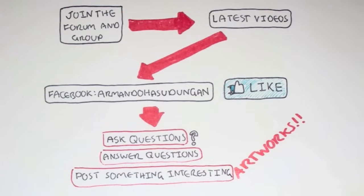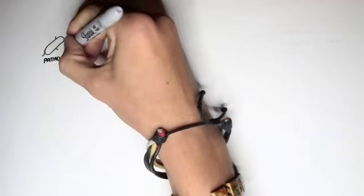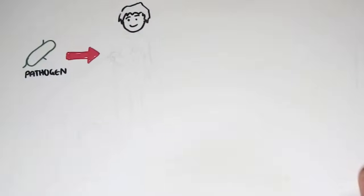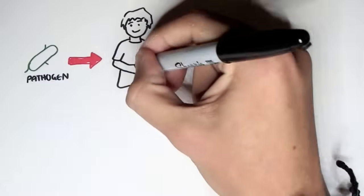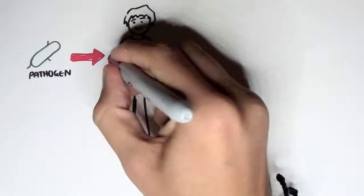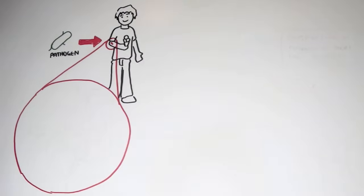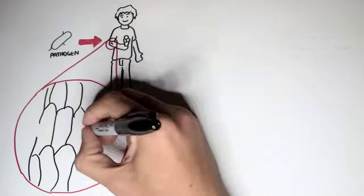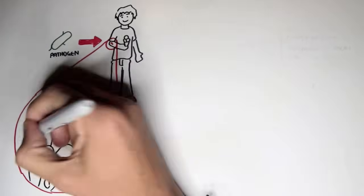In this video, we're going to talk about the complement system, and this is just going to be an overview to see how the complement proteins and the pathways are all related in some way. Now, what happens when a pathogen invades the body? The first line of defence is the innate immune system, which comprises the physical barriers and the chemical and biological barriers.